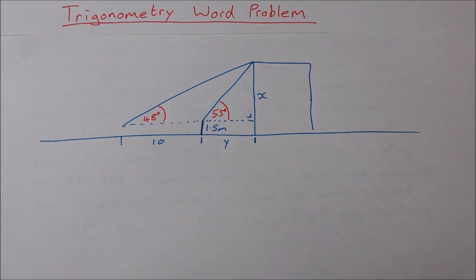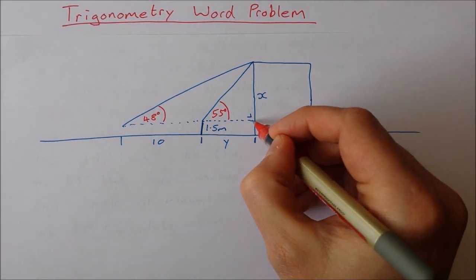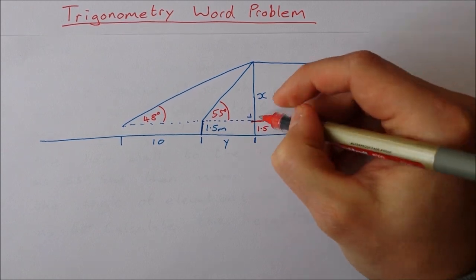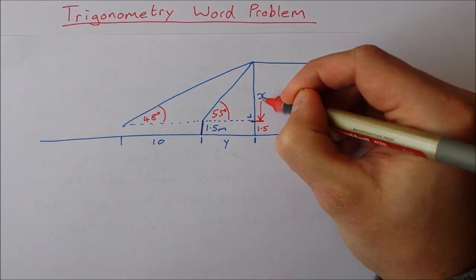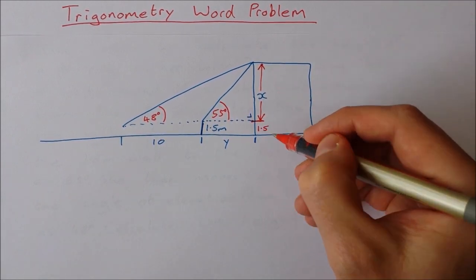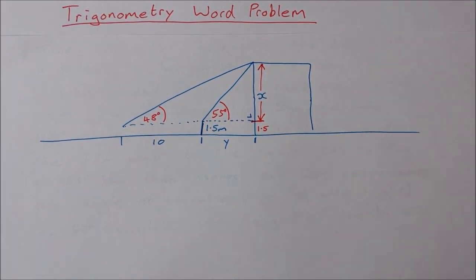Now one thing that I'm going to do is I'm just going to put a line here and say this is 1.5 and just have x as this here. And then when I calculate x in the end I need to add on 1.5. That'll just make it a bit easier for me when I'm working.